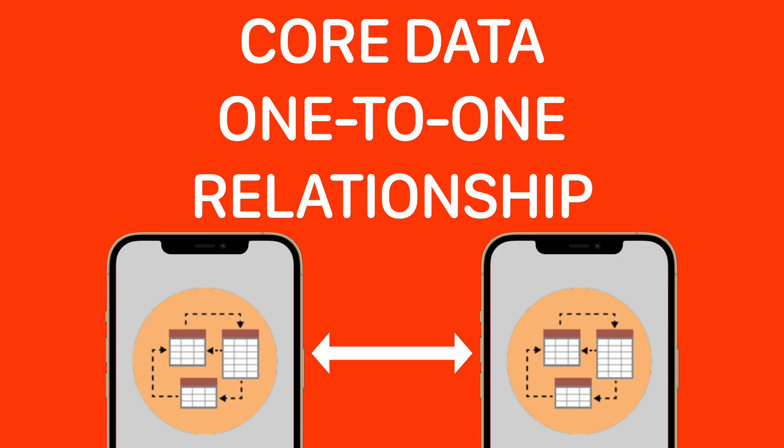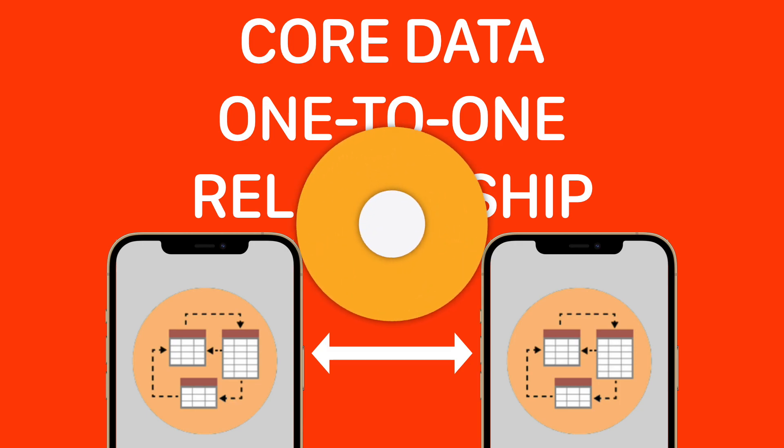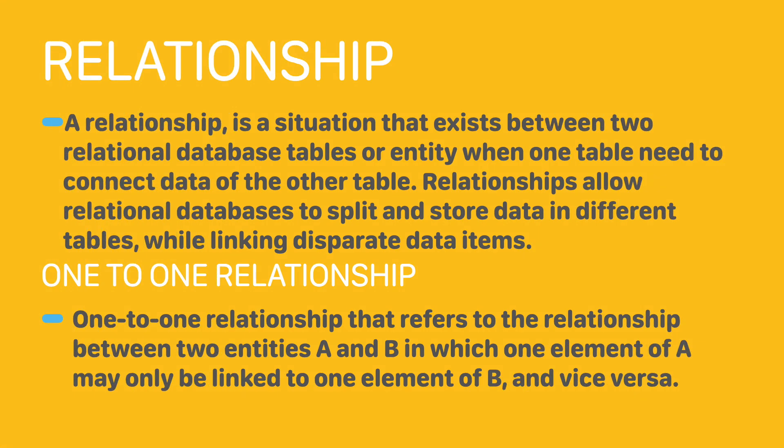Now let's take a look at some core concepts which we are going to tackle in this video. A relationship is a situation that exists between two relational database tables or entities when one table needs to connect data of the other table. Relationships allow relational databases to split and store data in different tables while linking disparate items. Relationships help the developer to connect easily between tables and different databases and also keep the schema or entity of the database simple.